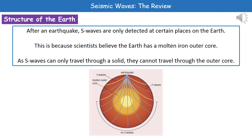But S waves, which can only travel through a solid, are only detected where you can see those yellowish coloured lines on the diagram. The ones that would have had to travel through the very centre of the Earth are not detected in the lower part — that's because there must be a liquid at the core which prevents them from travelling through.